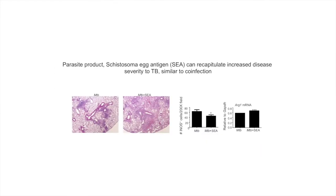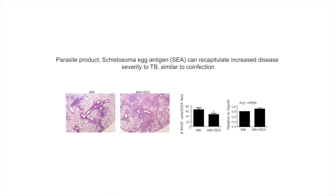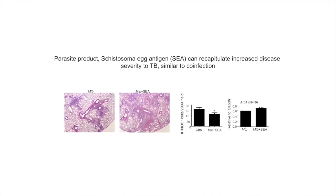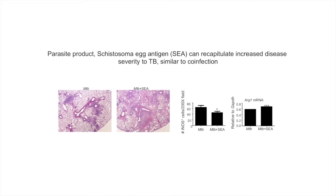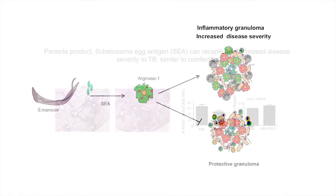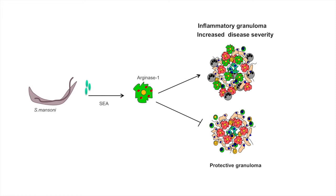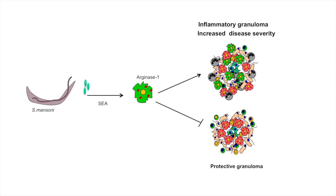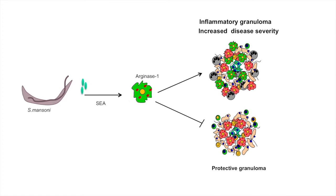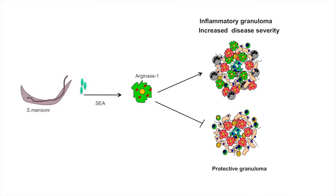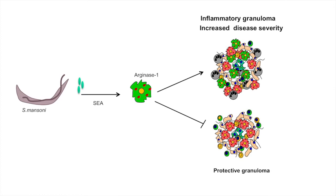We found that we could recapitulate increased susceptibility to tuberculosis simply by immunization of MTB-infected mice with schistosoma egg antigen, an immunomodulatory product of the parasite. Based on our results, we proposed that helminth and helminth products drive induction of arginase 1-expressing macrophages which then form inflammatory granulomas, increasing disease severity upon MTB infection.